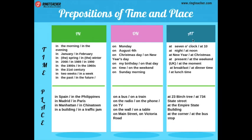La siguiente que podemos usar es at. At seven o'clock — y esta la usamos para describir el tiempo. At seven o'clock, at ten — a las siete en punto, a las diez. At night — en la noche. También: at New Year's, at Christmas — y también van a tener todo el sentido del mundo.